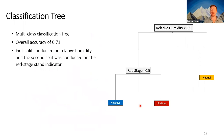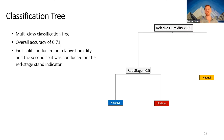We built a multi-class classification tree from the same data, producing a parsimonious result with only two significant splits. The two relevant predictors were relative humidity and red stage. Studies that included relative humidity tended to find neutral responses. Those that did not include it: if they were examining the red stage, it was a positive response — increased fire activity; otherwise it was a negative response.